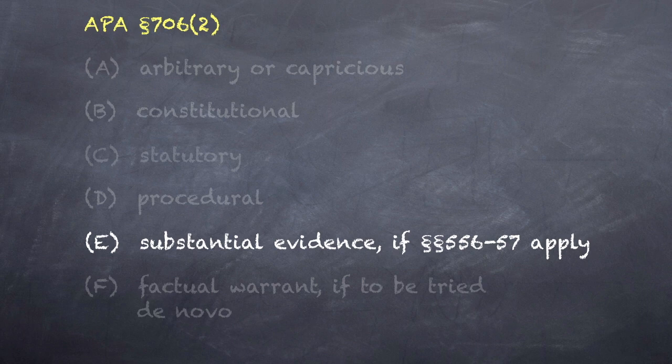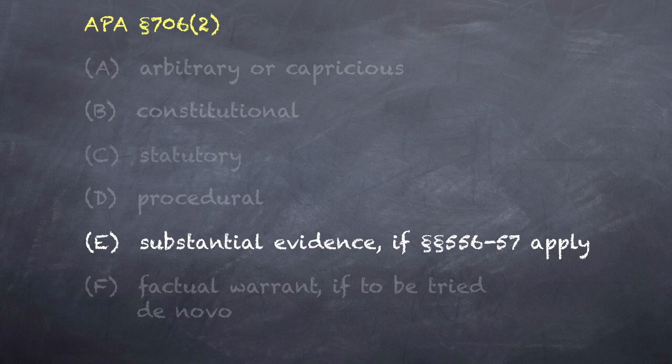That said, it is not hard to think up a case where there was substantial evidence in the record but the agency acted arbitrarily or capriciously anyway — the same idea we've seen in connection with Chevron analysis. An agency that switches between reasonable interpretations by coin toss every six months acts arbitrary or capriciously. So also an agency with a solid evidentiary basis can act arbitrarily if it acts on the basis of something utterly irrelevant.